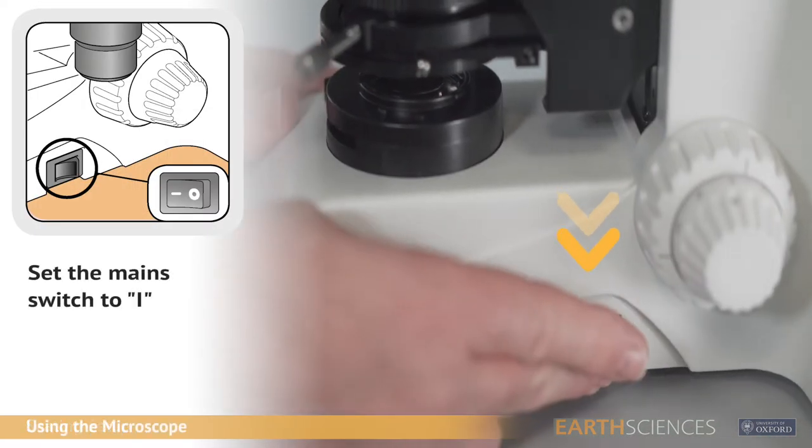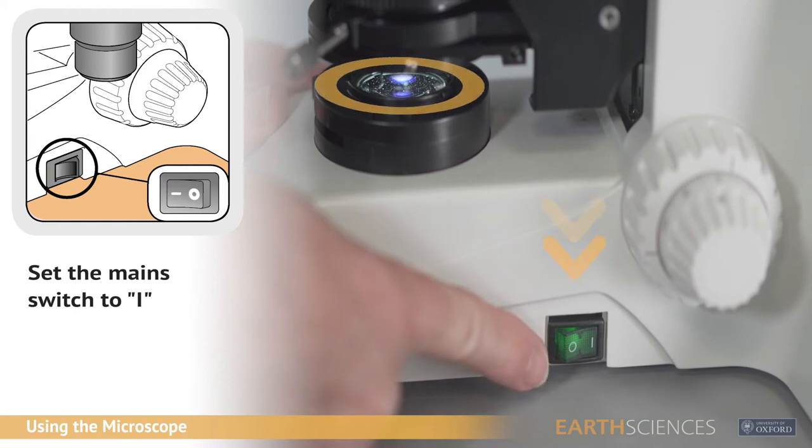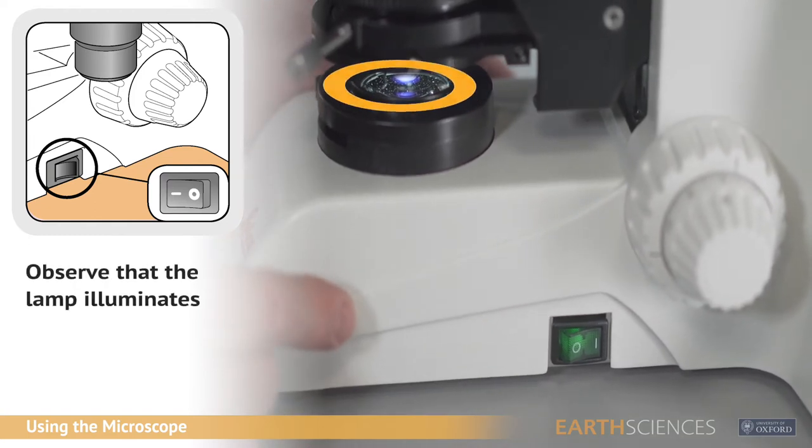On the right hand side of the base is the mains switch. Zero is off, one is on and will be illuminated.